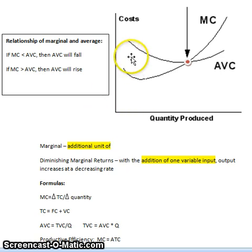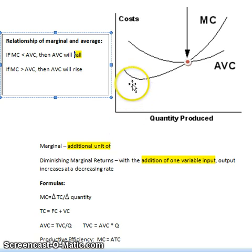The next thing to look at would be the relationship between marginal and average. You can see over here, I put that if marginal cost is less than average variable cost, then the AVC will fall. And so that's displayed over here where you have your marginal cost curve that is less than your average. And so it's pulling the average down. Think of it like if you were talking about your GPA. Your GPA would be the average, and the marginal could be this class.